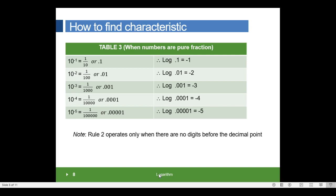10 raised to minus 1 is equal to 0.1, 10 raised to minus 2 is 0.01, 10 raised to minus 3 is 0.001, 10 raised to minus 4 is 0.0001, and so on. Here, Rule 2 operates only when there are no digits before the decimal point.